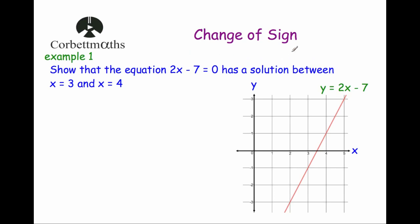In this video we're going to look at change of sign. Change of sign is a very useful technique to find where a solution to an equation might lie, particularly if the equation is a very difficult one to solve. Our first example is to show that the equation 2x minus 7 equals 0 has a solution between x equals 3 and x equals 4.